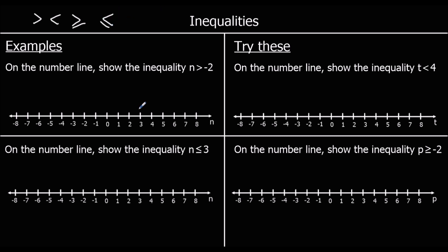So let's look at this first example. It says on the number line, show the inequality: n is bigger than minus 2. We know n is bigger because it's on the bigger side, so n is bigger than minus 2. We put a circle at negative 2, and we draw an arrow in the direction of the bigger side.